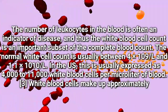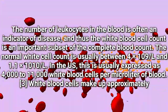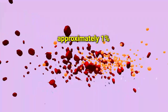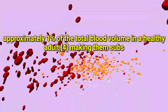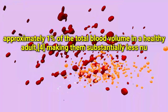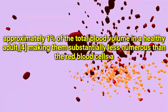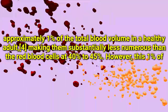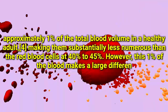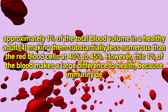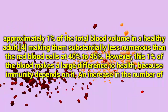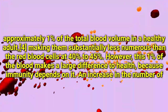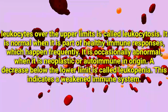White blood cells make up approximately one percent of the total blood volume in a healthy adult, making them substantially less numerous than red blood cells, which make up 40 to 45 percent. However, this one percent makes a large difference to health because immunity depends on it.